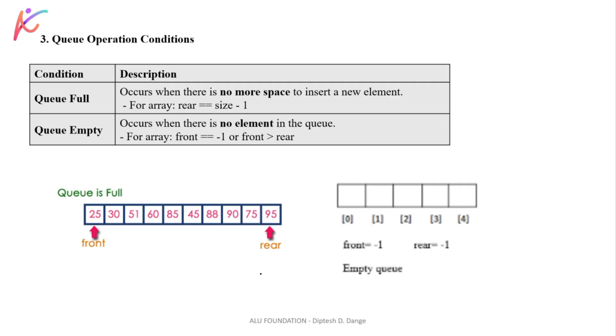Now Queue operation conditions. I said first check if the front is here, the rear is here, Queue Full or not, Queue Empty or not. So how do we know? Queue operation conditions: Queue Full and Queue Empty.